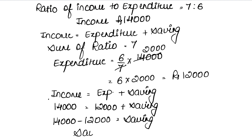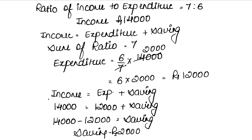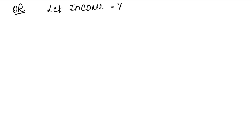The answer is rupees 2,000. There is also an alternate pattern. Since we have income and expenditure ratio, let x be the multiplier. Let income be 7x and expenditure be 6x.